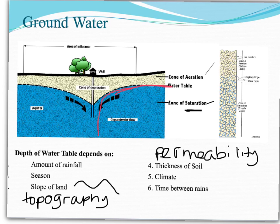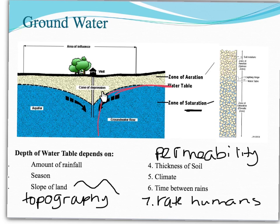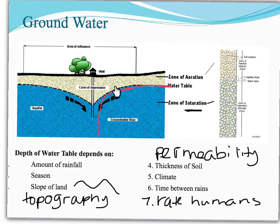Climate, which will also determine rainfall. The time between rains. And number seven: the rate at which humans use the water. That is what you see going on right here — this cone of depression. We have put a well into the groundwater to get water out of the ground. If we're using it a lot, we're going to pump a lot of water out. It kind of looks like a straw, and we have this cone of depression — a decrease in water table that immediately surrounds the well.